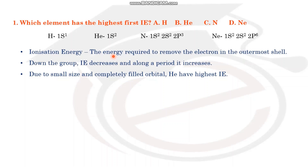Across the period, ionization energy increases. Down the group, ionization energy decreases. There are exceptions that are found in the book of physical chemistry.